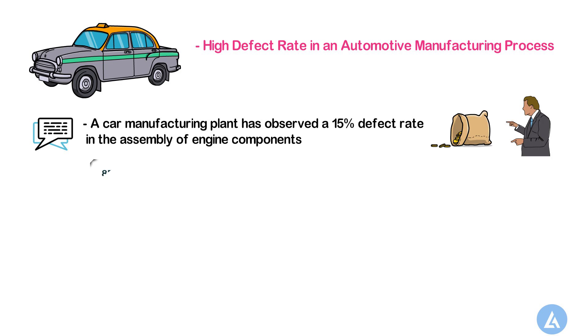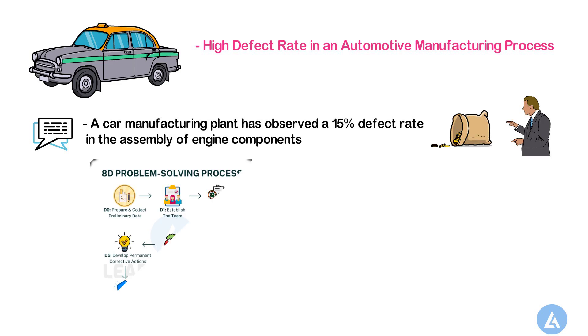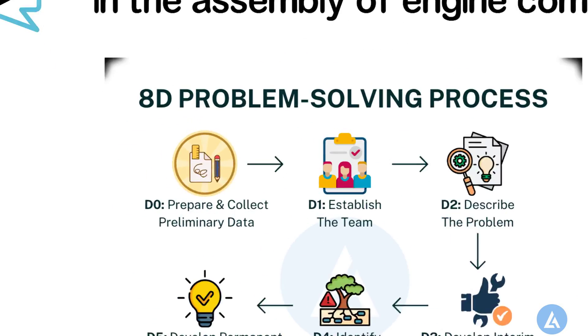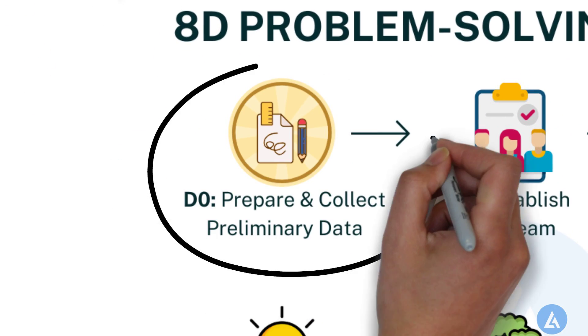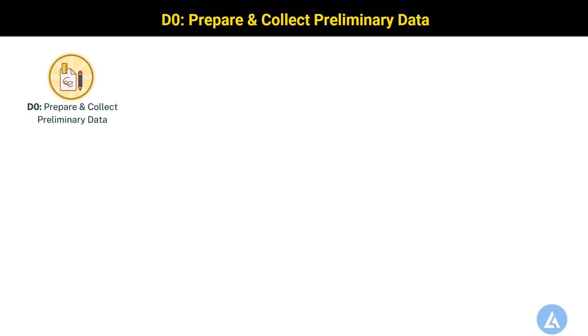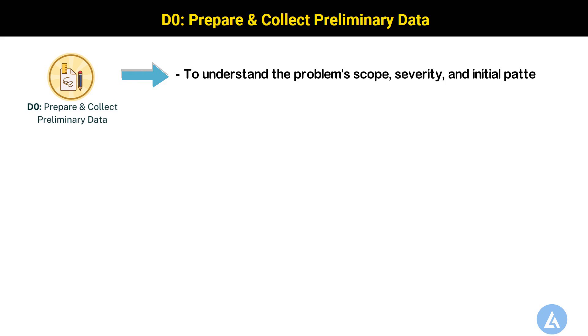Now let's see how we are going to use the 8D problem solving approach for this problem. The first phase is the preparation phase, represented by D0 — Prepare and Collect Preliminary Data. Before forming a team and starting the problem solving process, it is essential to gather preliminary data to understand the problem scope, severity and initial patterns.